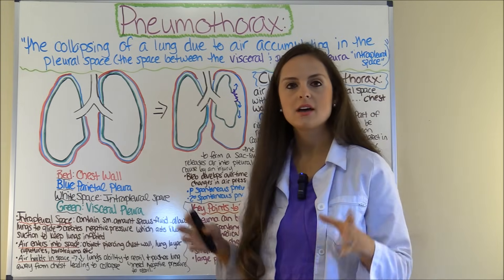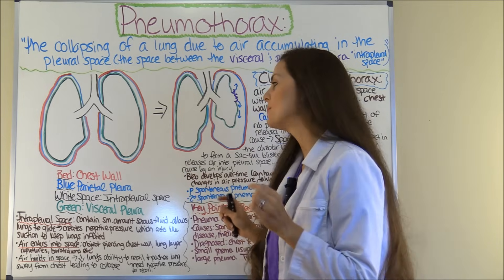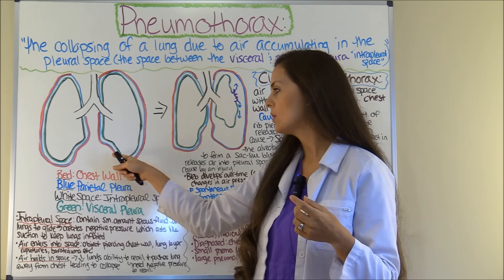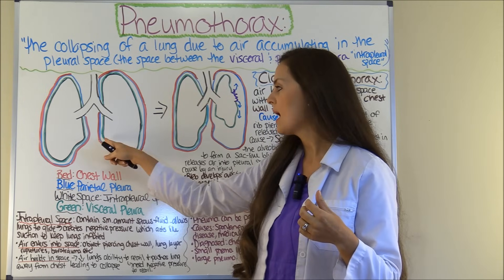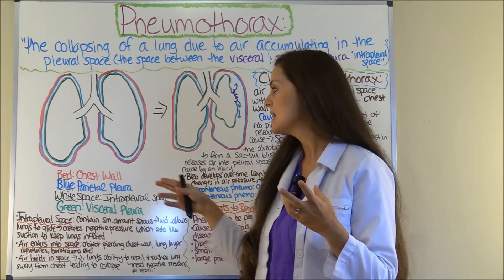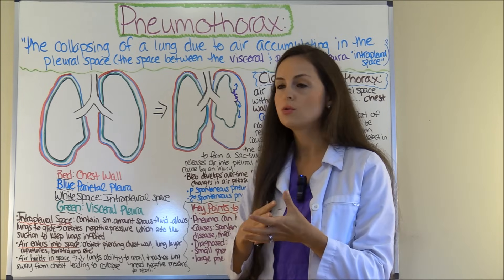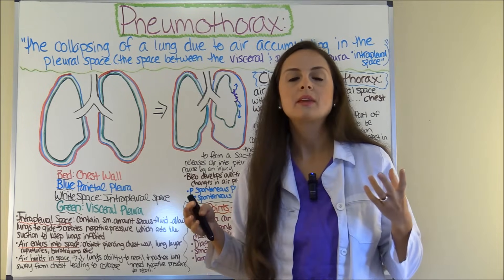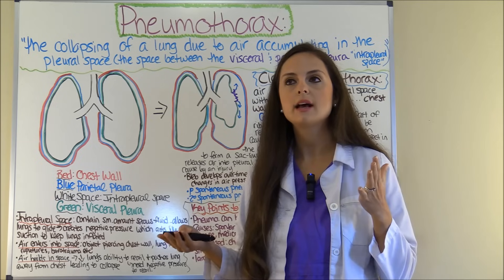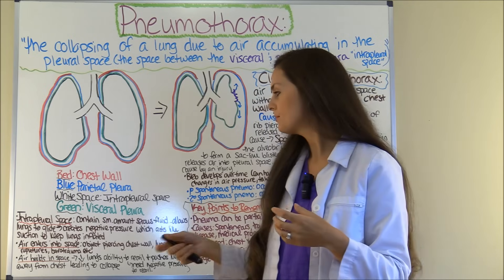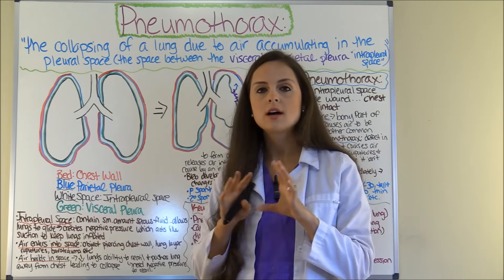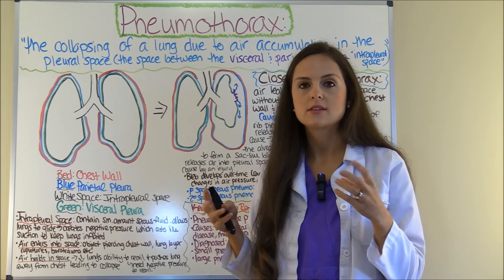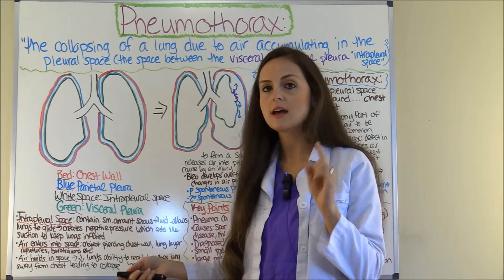Now let's look at the pathophysiology of a pneumothorax, but first let's look at lung anatomy. Here you have some lungs. What you see in red is the chest wall, and attached to the chest wall is your parietal pleura. The white area is the intrapleural space. The green is your visceral pleura, which attaches to the lung. In this intrapleural space you have small amounts of serous fluid, so as you breathe in and breathe out, that fluid allows your lungs to glide without any pain and creates a negative pressure. Your lungs love negative pressure.